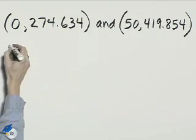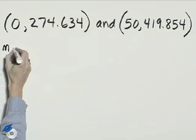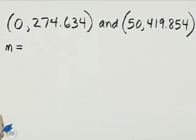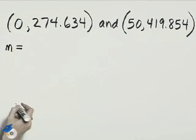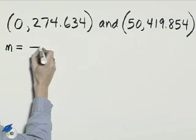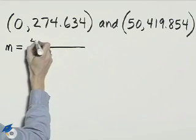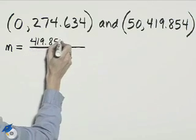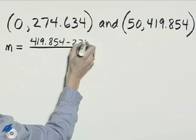In order to find the function, we first need the slope. We'll have m equals y₂ minus y₁ over x₂ minus x₁. If we say 419.854 minus 274